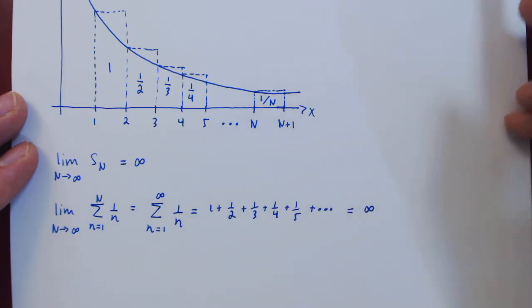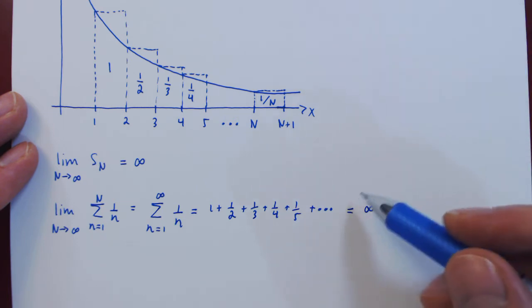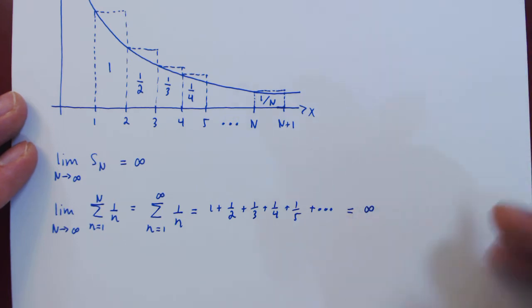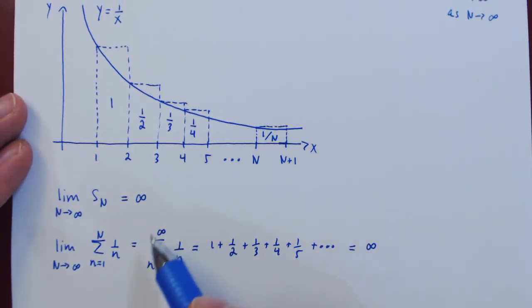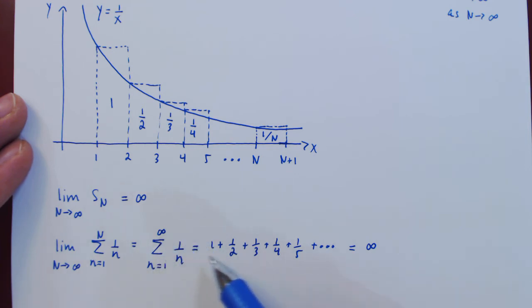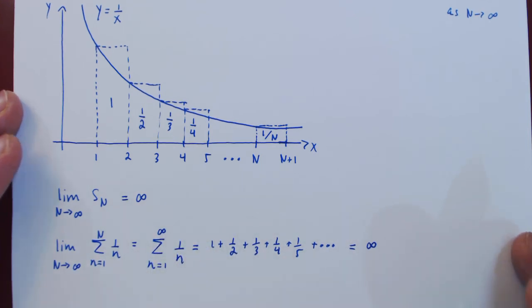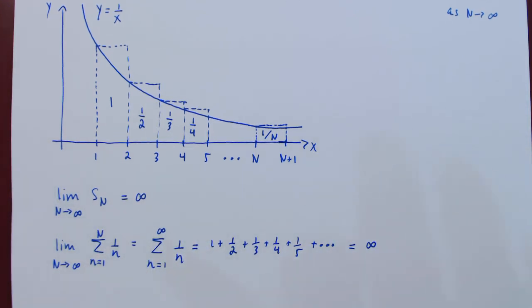We have just shown by comparing S_n to the area below the curve 1 over x that this infinite sum is actually equal to infinity. It is impossible to sum all the reciprocals of the positive integers. As you keep adding more and more terms, the sum will keep increasing without bound, and in the limit it blows up to positive infinity. This infinite sum is usually called the harmonic series.